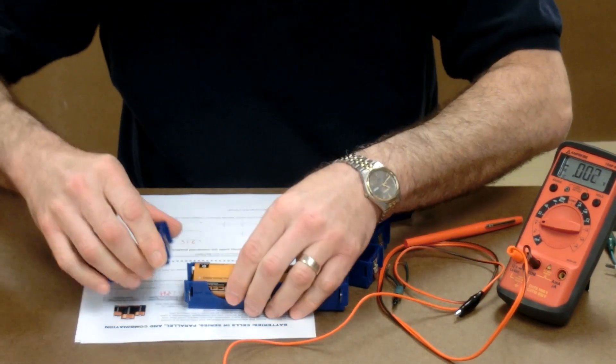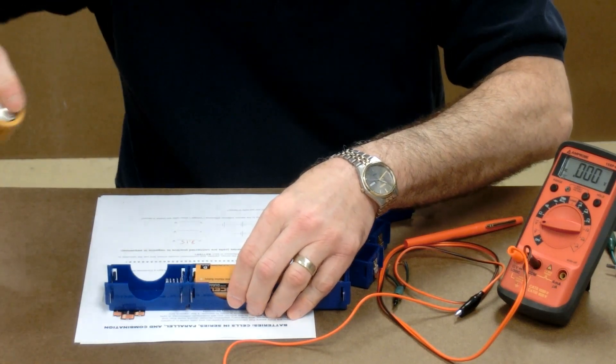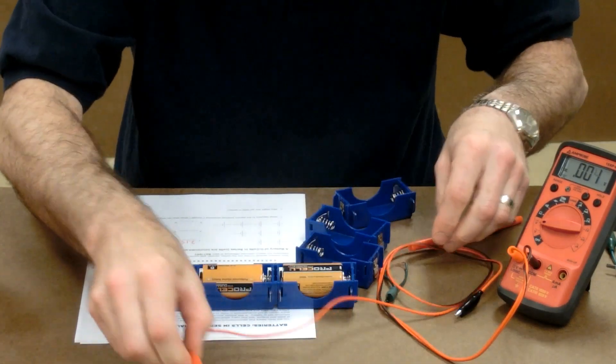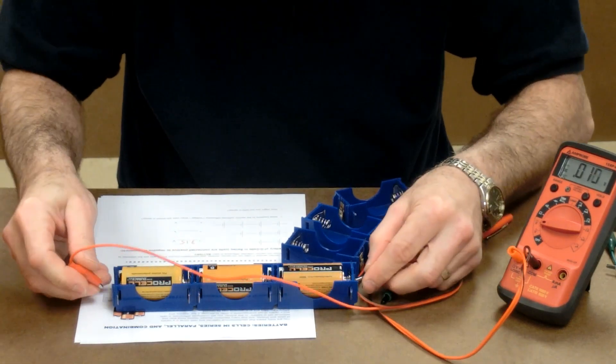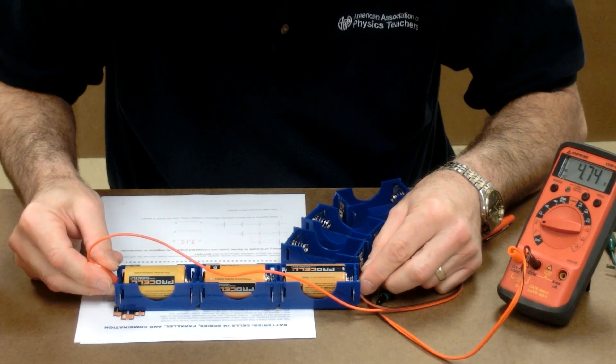We add a third in series. The voltage of three cells in series, 4.75.